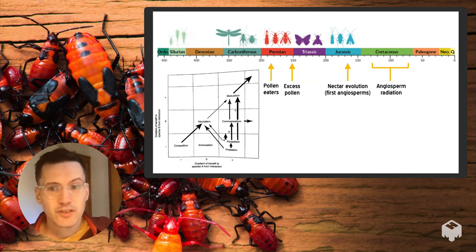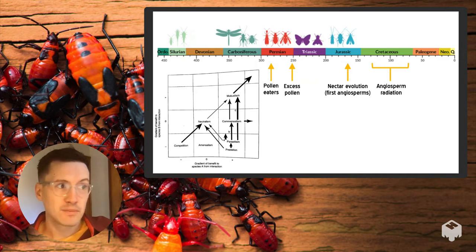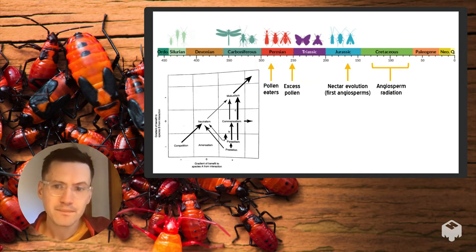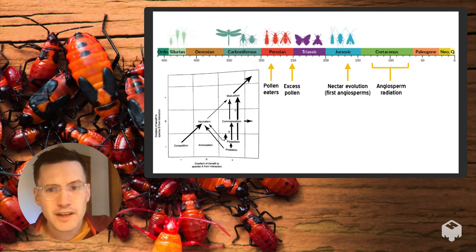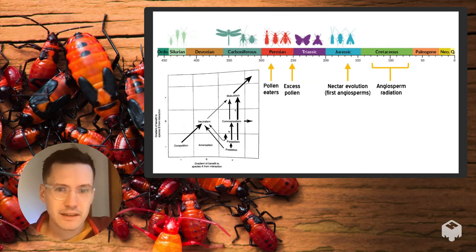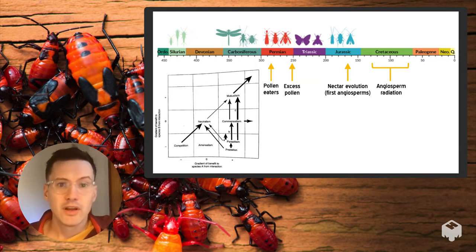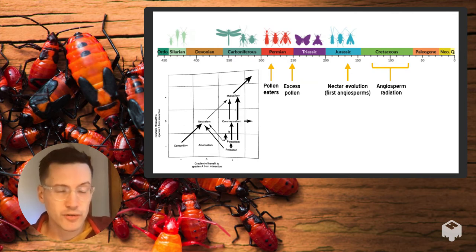Eventually the first true flowering plants, the angiosperms, appeared sometime in the late Jurassic and early Cretaceous period. Thinking back to the evolution of mutualisms, we can see how this formerly commensalistic relationship between insect pollen-eaters and pollen producers was subject to enough selective pressure to eventually push it into a mutualistic relationship.